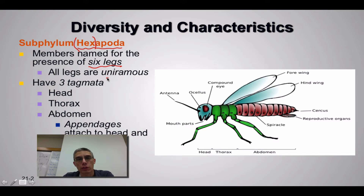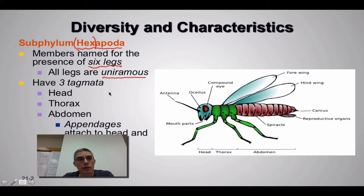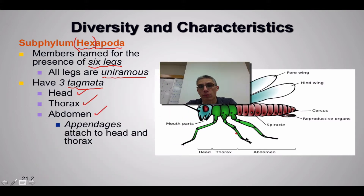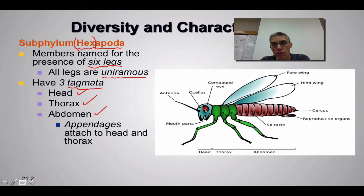What makes this group a little different is that their legs are actually uniramous — they do not have the branching pattern seen in the previous subphylum. So instead of being biramous, they're uniramous. There are three tagmata, or three body segments, in these animals: a head, a thorax, and an abdomen. Looking at the diagram on the right, you can see the head is clearly visible, the thorax is where the majority of the legs and wings are attached, and then the abdominal region is towards the posterior of the animal.